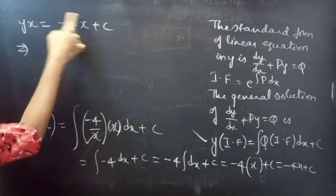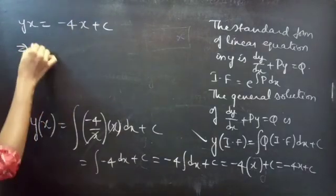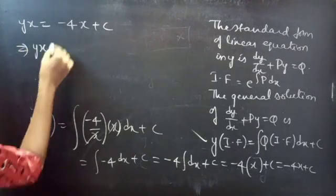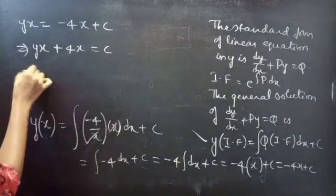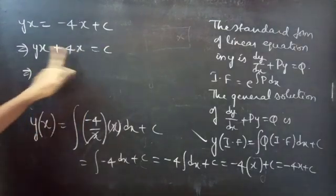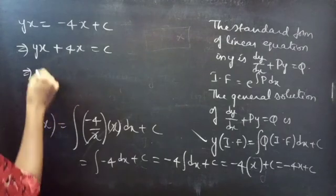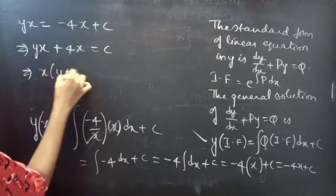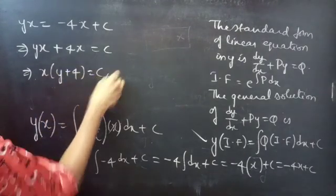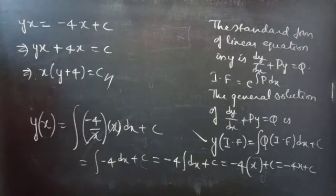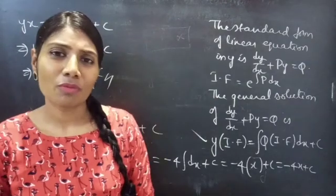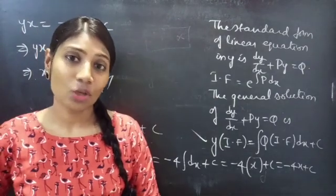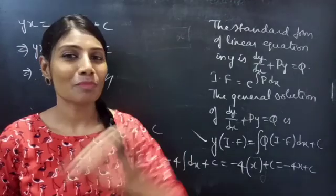Now, bring -4x to the LHS: yx + 4x = c. We can take x common from both terms, giving x(y + 4) = c, which is the required general solution. We have solved a problem from linear differential equations in this video. Hope you understand. We'll see in the next video. Bye-bye!